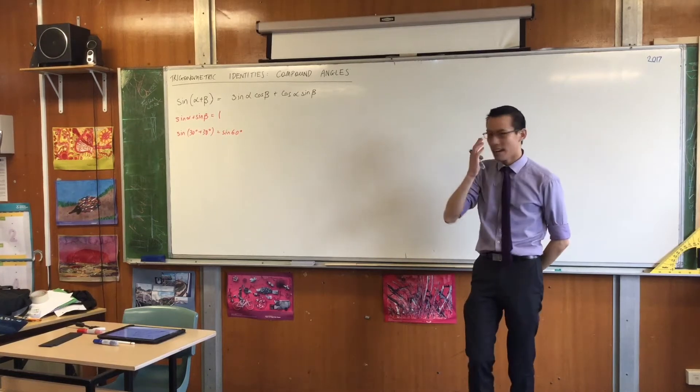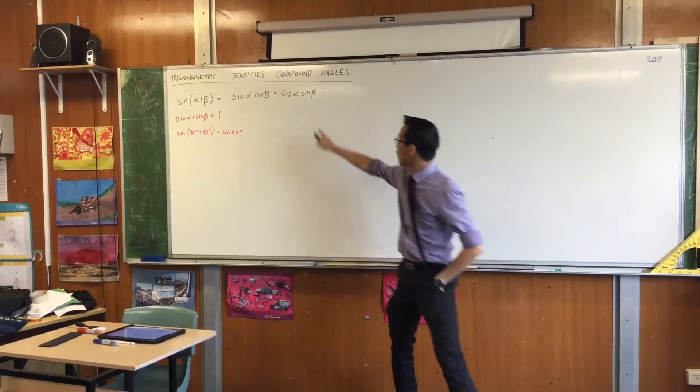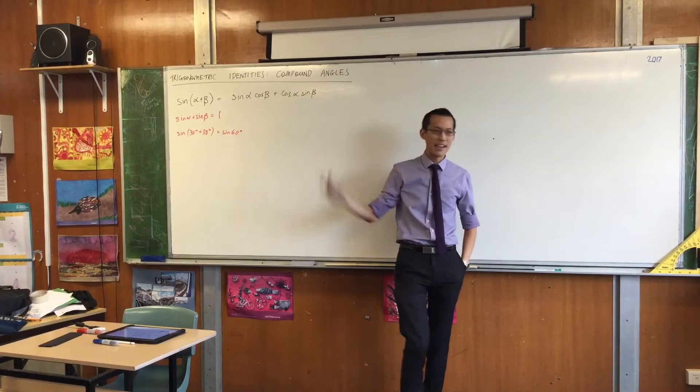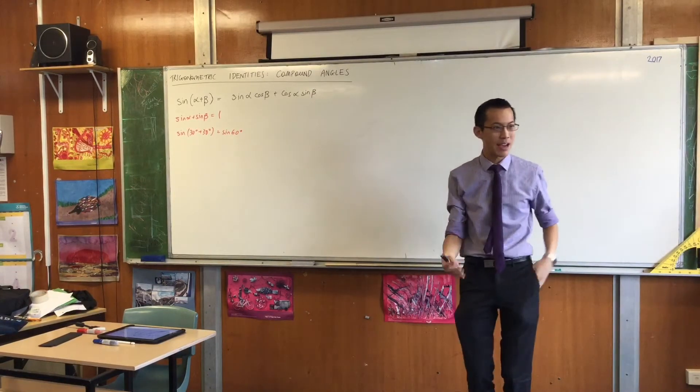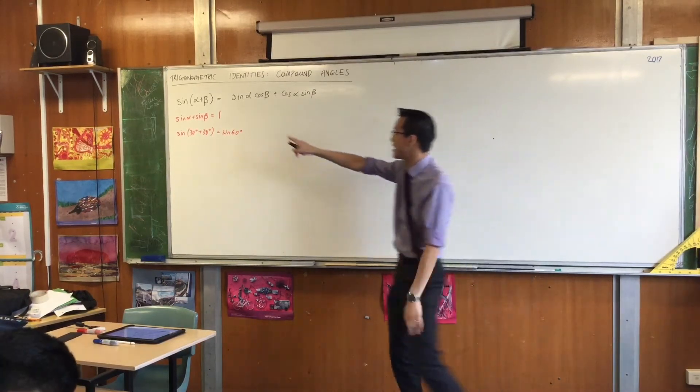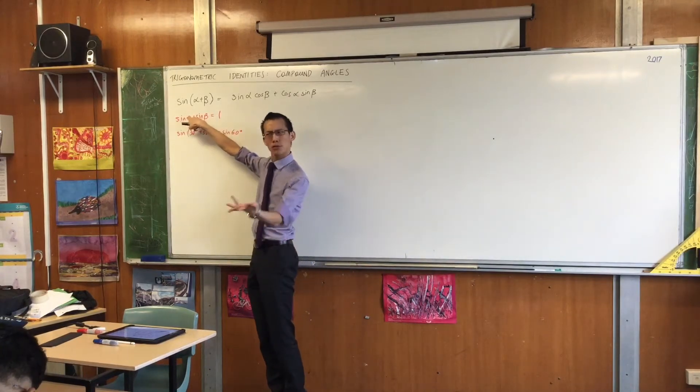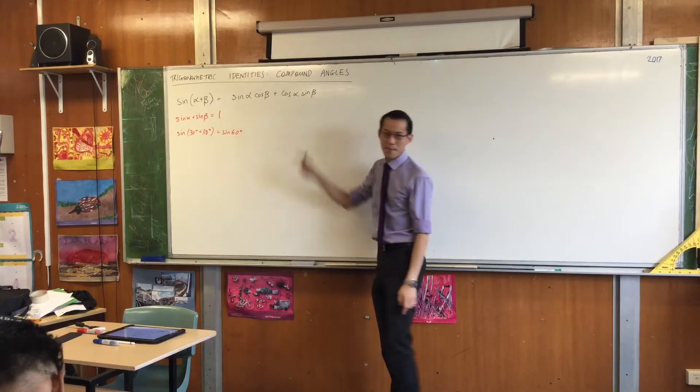So, as you can see by the heading, this kind of identity is what we call a compound angle identity. And the name makes sense, right? You're putting more angles inside here than just one. You've got multiple ones.